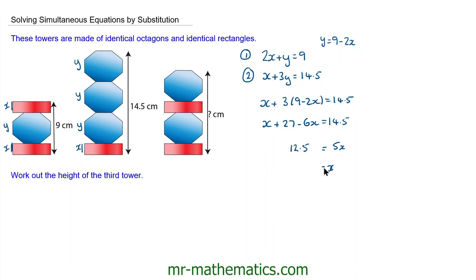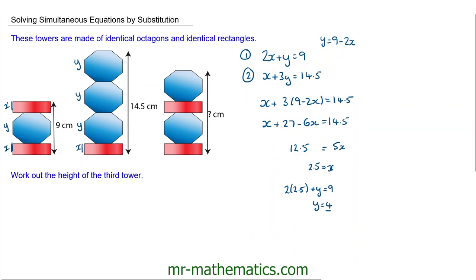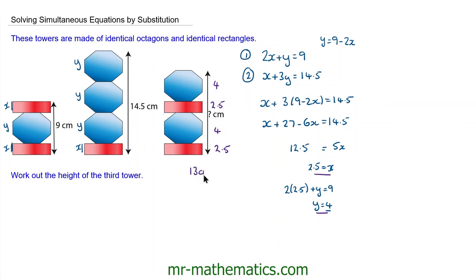So x is equal to 2.5. Now I can substitute this back into equation 1: so 2 lots of 2.5 plus y makes 9, so 5 add y makes 9, so y equals 4. Now we've got x and y, we can work out the height of the third diagram. The height of the rectangle is 2.5 and the height of the octagon is 4, so we have 5 plus 8 gives us 13 centimetres.